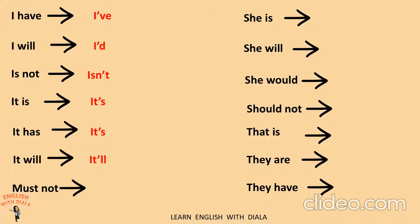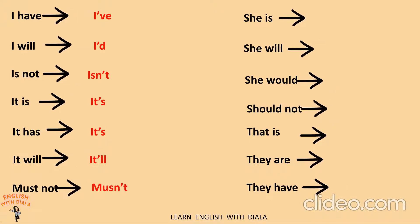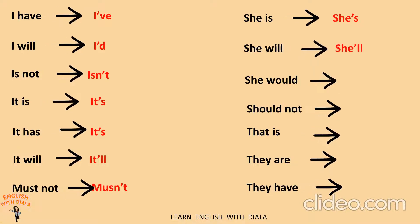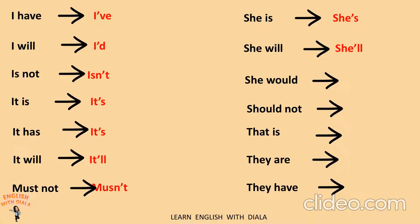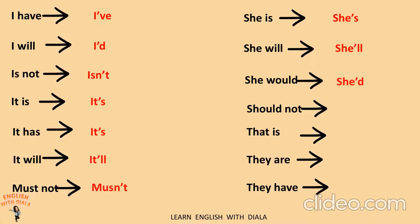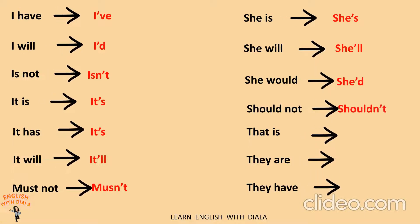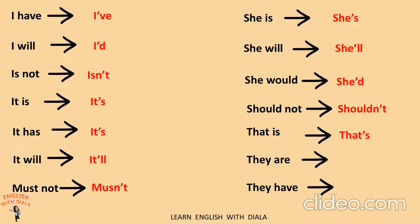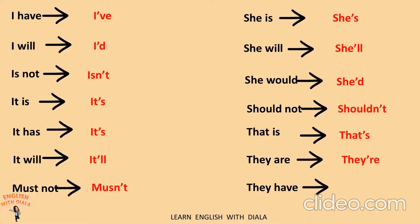Must not — mustn't. She is — she's. She will — she'll. She would — she'd. Should not — shouldn't. That is — that's. They are — they're.